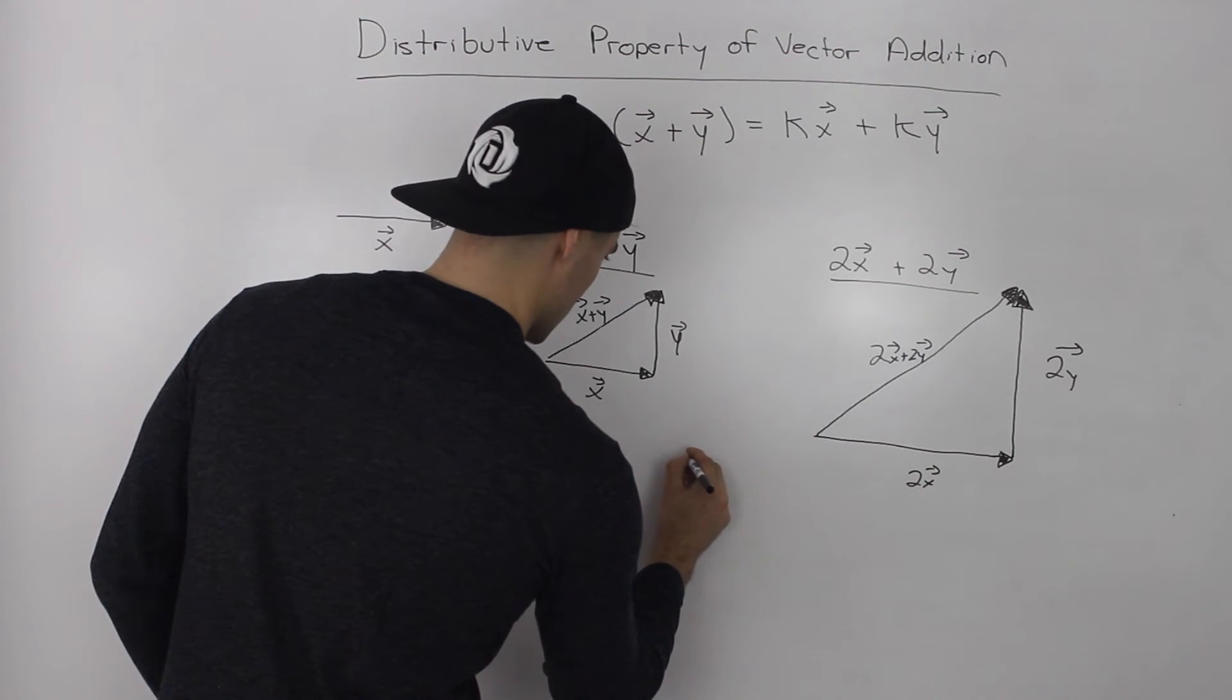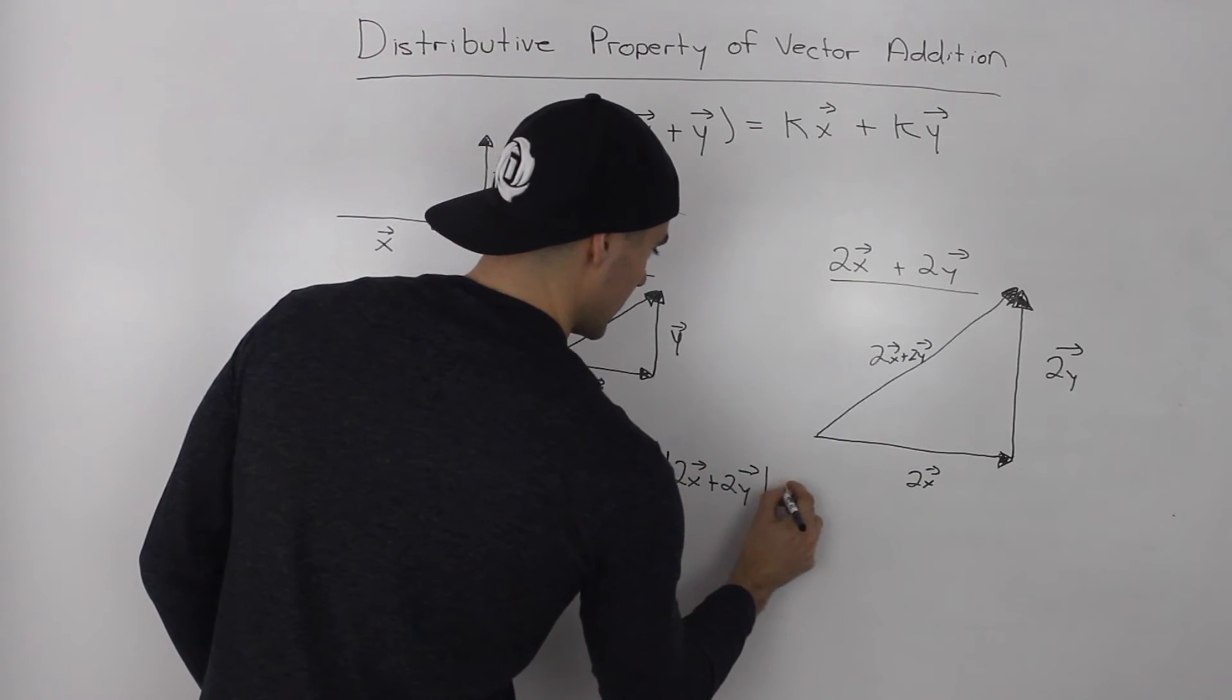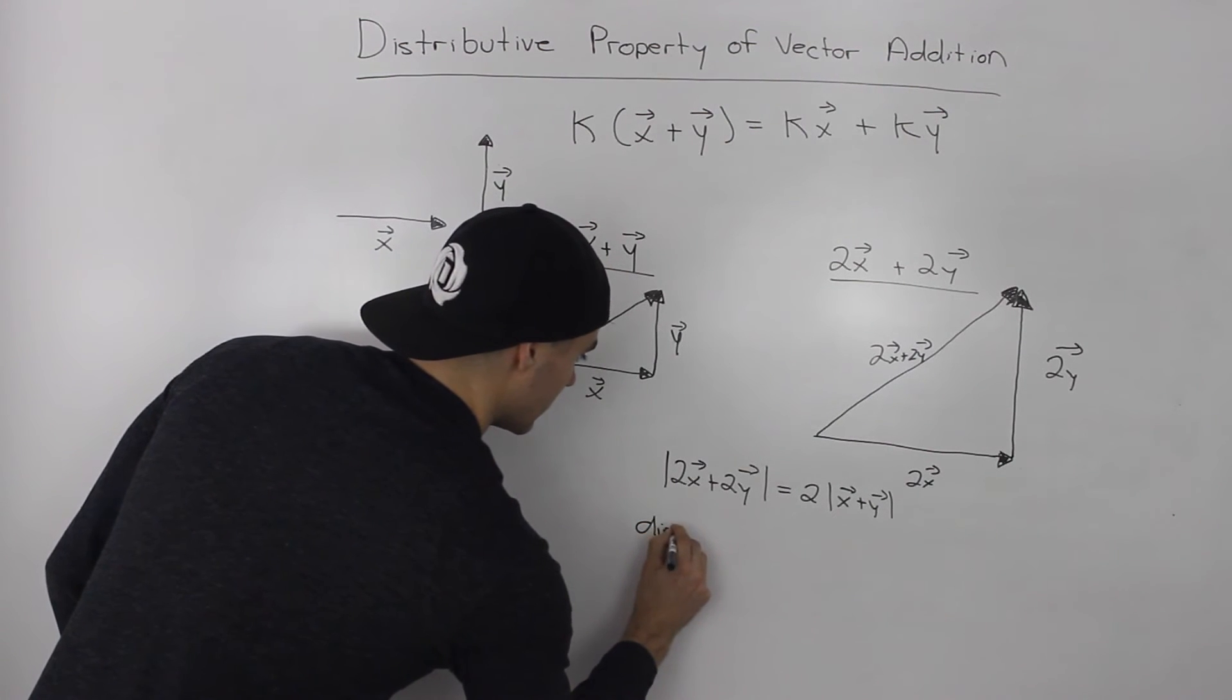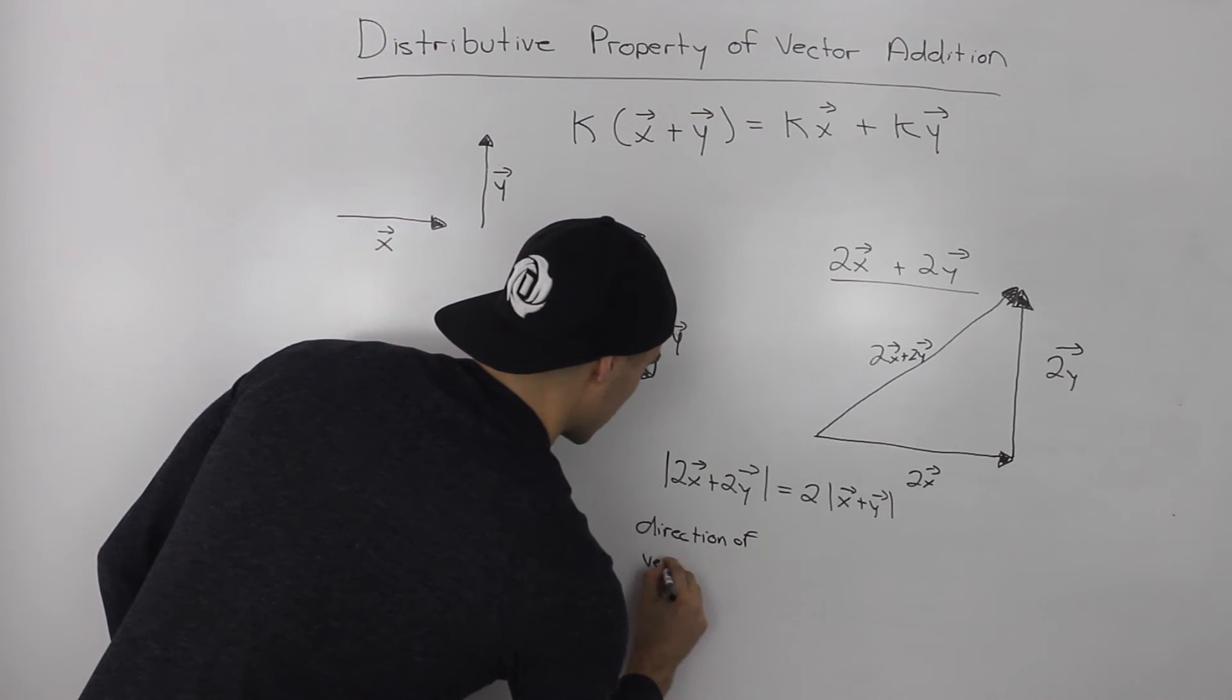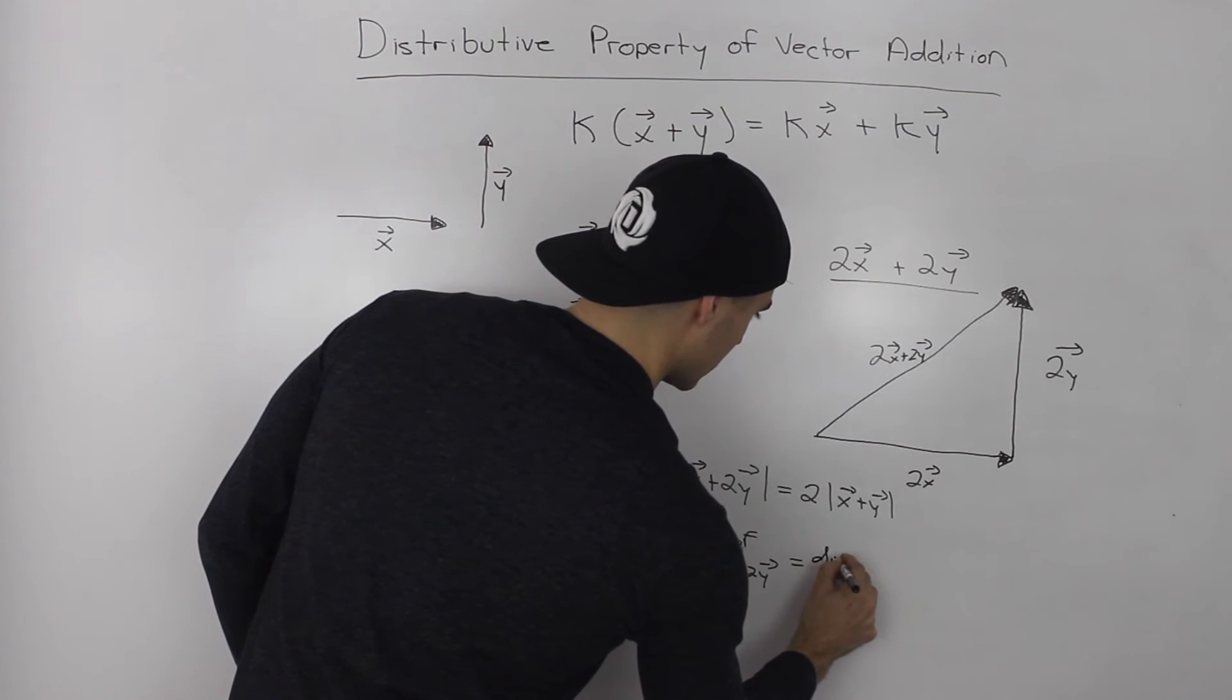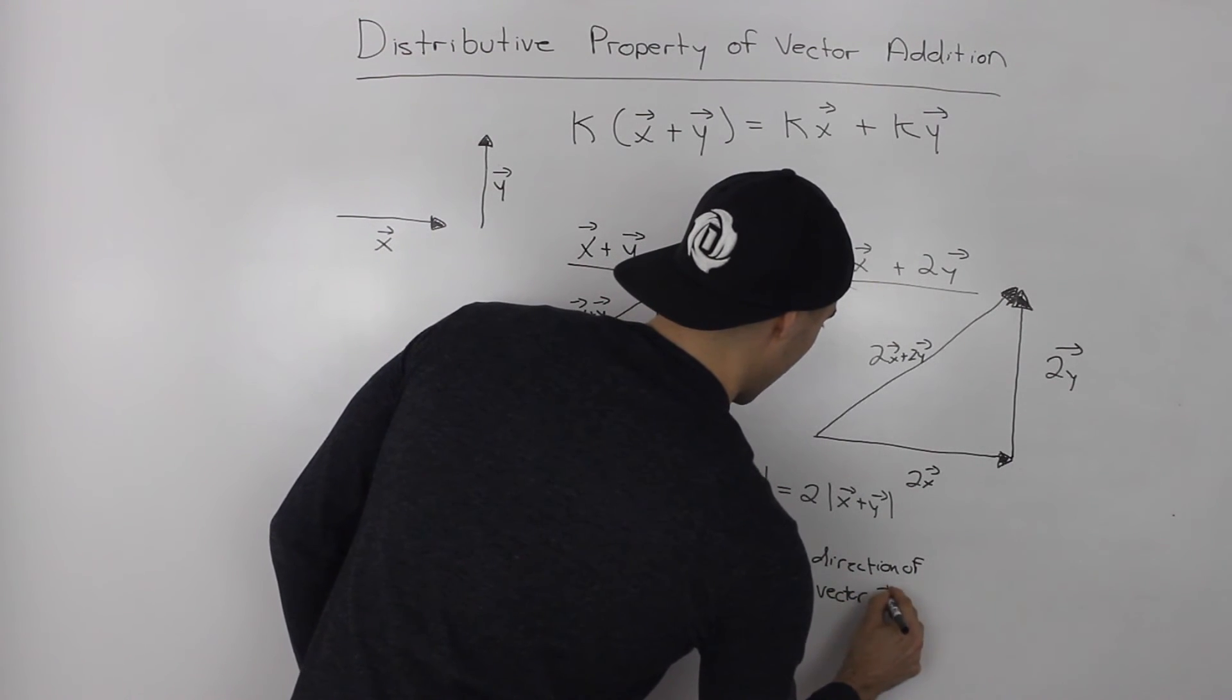So how would we write this? So 2x, the magnitude of 2x plus 2y is basically double the magnitude of vector x plus y. Also, the direction of vector 2x plus 2y is equal to the direction of vector x plus y.